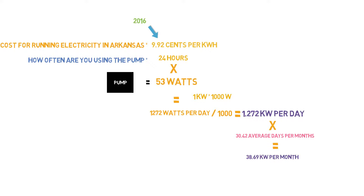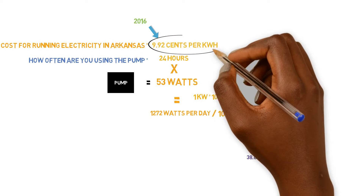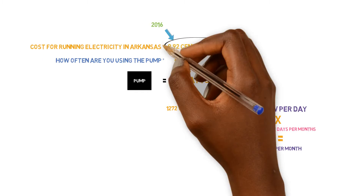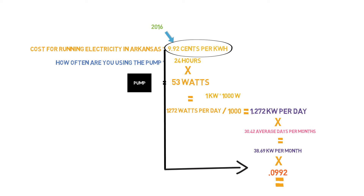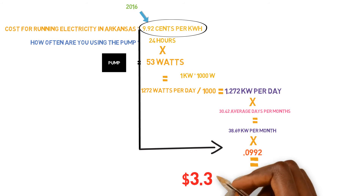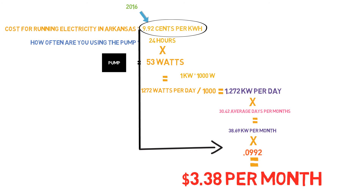We're almost there. We know we have 38.69 kilowatts per month, and we can figure out the cost by taking that and multiplying it by Arkansas's average cost per kilowatt hour. So we have 38.69 times 0.0992 — we use 0.0992 because we moved the decimal over to represent cents in correct calculations. And that gives us a whopping $3.38 per month.